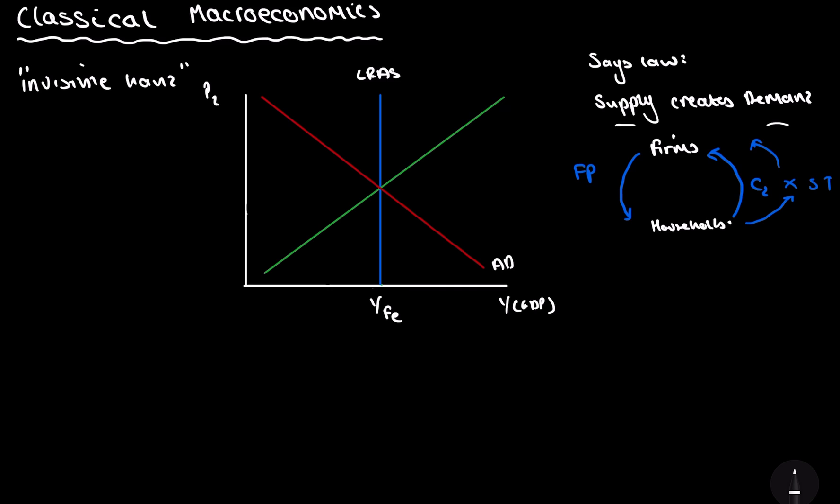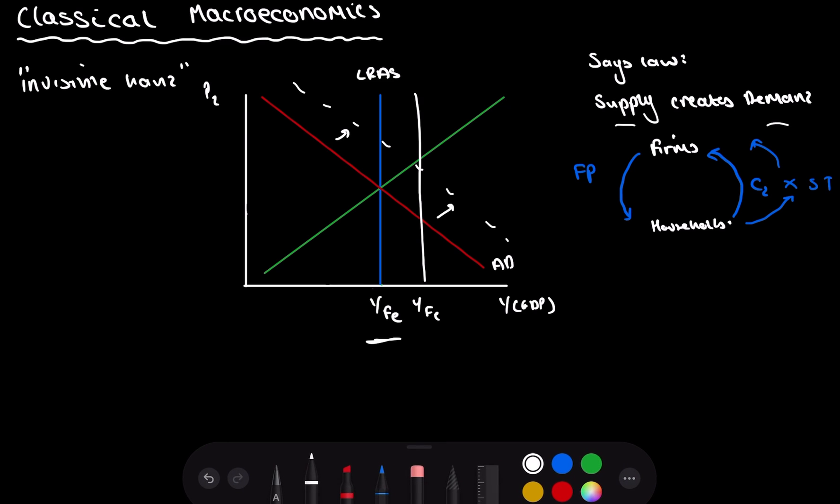And you can see this here. Because if AD was to magically shift up, let's say there was a fiscal policy, as you can see, there is no change in the national GDP. But if supply changed, let's say due to an increase in the factor of production, let's say there was a new factory being built, you can see here, this will shift and there'll be a new equilibrium. So that's essentially explaining Say's law.